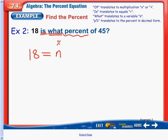When we solve for n, we're going to get a decimal, and the percent sign is going to be a reminder to change that decimal into a percent. Of means multiplication, and 45 is just going to be 45. So now I have 18 equals some number times 45.